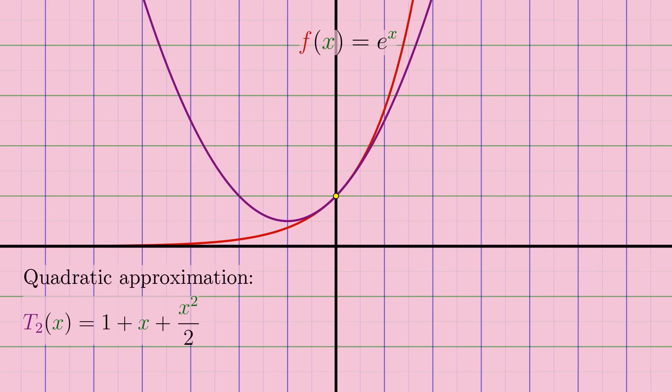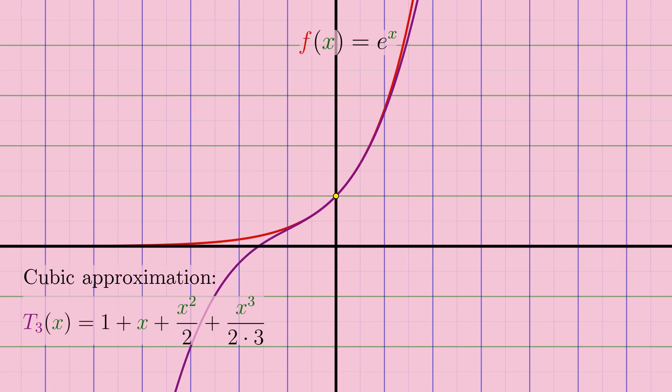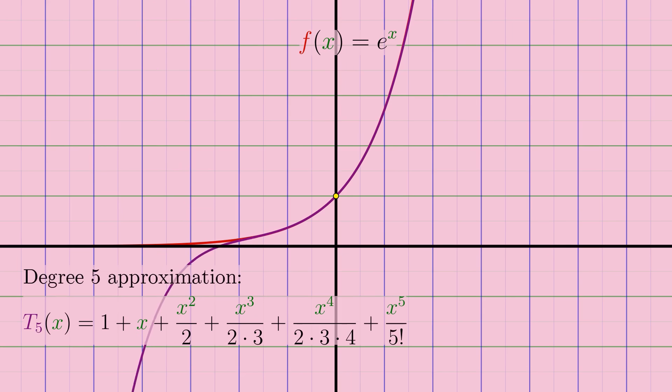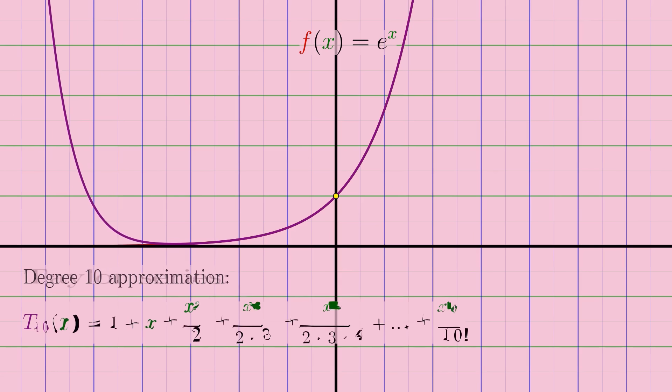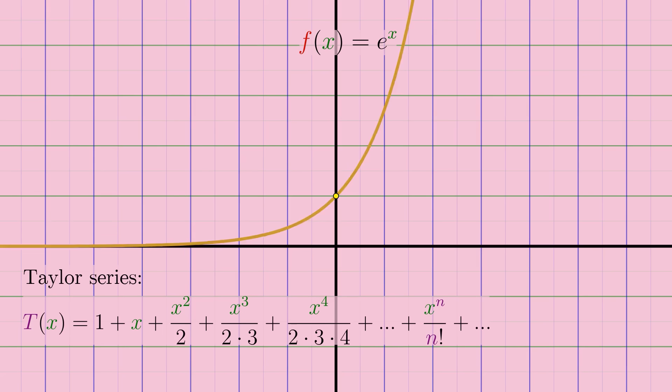You can probably guess what comes next. If a quadratic approximation is better than a linear, then a cubic approximation will be better than a quadratic, and a quartic will be better still, and so on. The higher the degree of polynomial we use, the more higher order derivative information about the curve we can incorporate into it, yielding a better and better approximation until in the limit we get what's known as the Taylor series of e to the x around x equals zero.